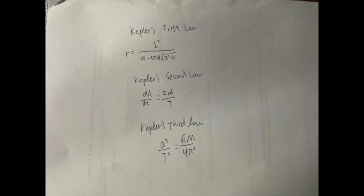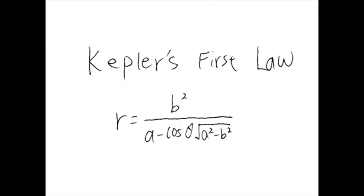Each law is significant in its own way. In Johannes Kepler's original words, the first law states that the orbit of every planet is an ellipse with the sun at one of the two foci, which can be seen in the equation here. This law overthrows traditional views on planetary orbits, whereby planets orbit in perfectly circular orbits.